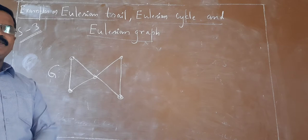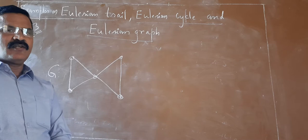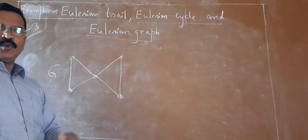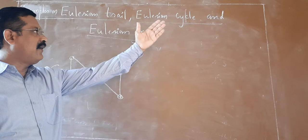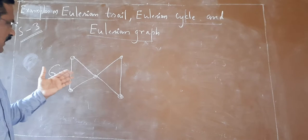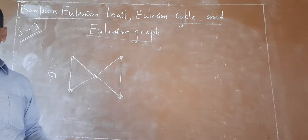Dear students, myself Dr. Mallik Arjun S. Biradhar, assistant professor in mathematics, Government First Grade College. In the previous class, that is in session 2, we have discussed about Eulerian trail, Eulerian cycle, and Eulerian graph. We took some examples also — this was an example of an Eulerian graph. That was the discussion from the previous class.